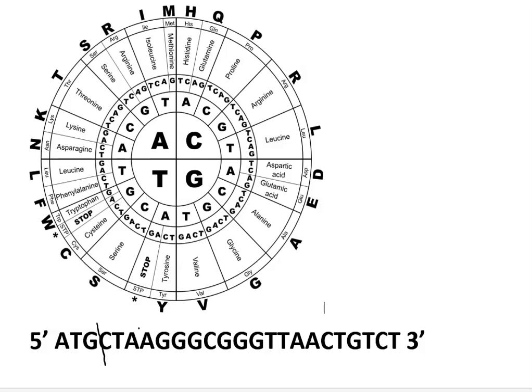So we've got ATG, CTA, AGG, GCG, GGT, we've got TA, CTG, TCT. So it works out quite nicely. It is divided by three our sequence quite nicely.